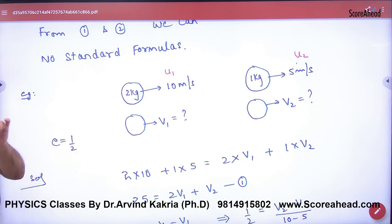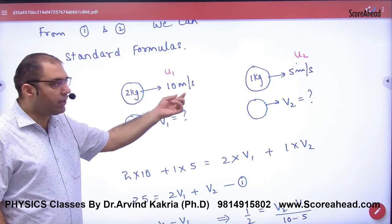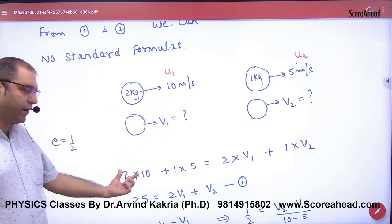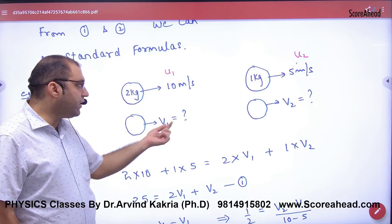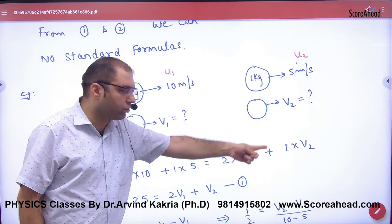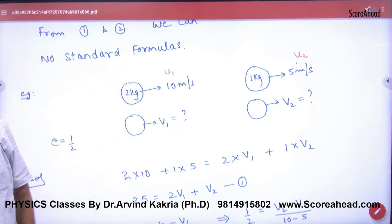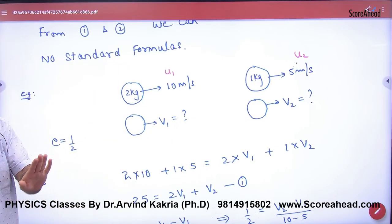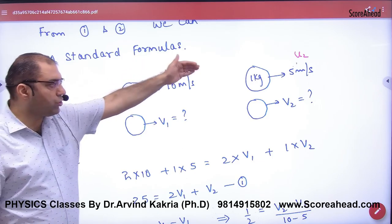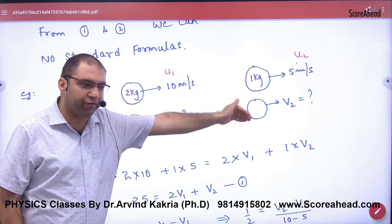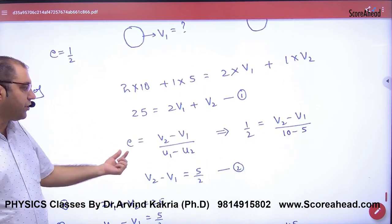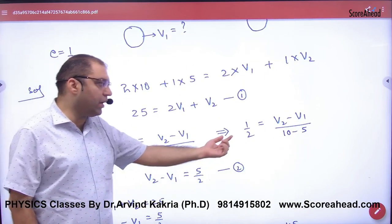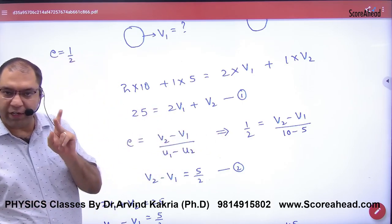So the first equation is momentum conservation. 2 into 10 plus 1 into 5, this is the first equation, is equal to after collision 2 into V1 plus 1 into V2. So momentum conservation is clear. M1*U1 plus M2*U2 equals M1*V1 plus M2*V2. There are two variables. Other equation is restitution. E value is half. V2 minus V1 over U1 minus U2.